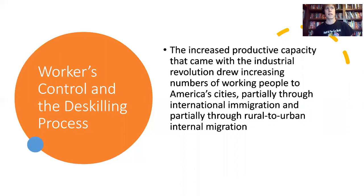We covered in the lecture on the Civil War how the system of slavery in the South collapsed within the matter of a few years through mass self-emancipation of slaves, which eventually prompted the federal government to issue the Emancipation Proclamation. In the North, the system of free labor is going to hold out a little bit longer.